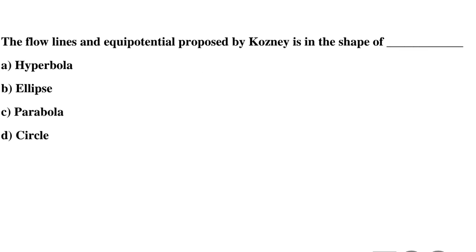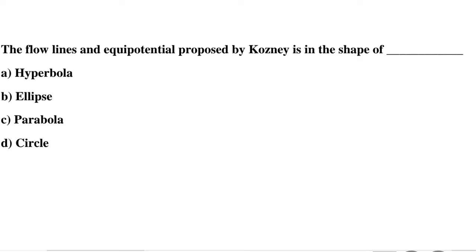Question 16: The flow lines and equipotential lines proposed by Cozeny are in the shape of — Option A: hyperbola, Option B: ellipse, Option C: parabola, Option D: circle. The correct answer is Option C: parabola.